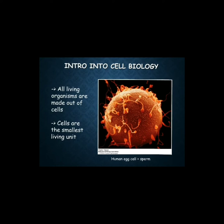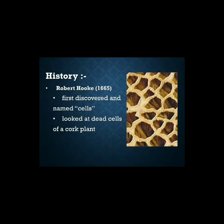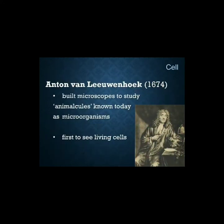We are going to know the history of cells. Robert Hooke in 1665 first discovered and named the cell — he looked at dead cells of a cork plant, which is an important phenomenon. Then Anton van Leeuwenhoek in 1674 used a microscope to study animal-like structures, known today as microorganisms, and was the first to see living cells.